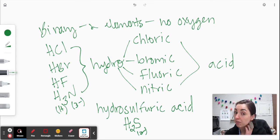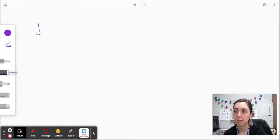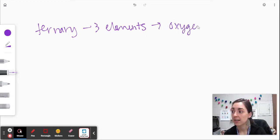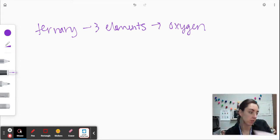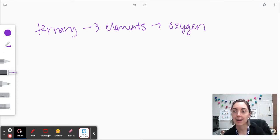So remember, we have that hydro in front and it's binary. There's no oxygen. It's just hydrogen and another anion. So let's try now what we call the ternary acids. Ternary, binary meant two. Ternary means three elements. And one of those elements is oxygen. So all of these have oxygen. These are actually based on your polyatomic ions. So you're going to want to make sure that you have your ion sheet.